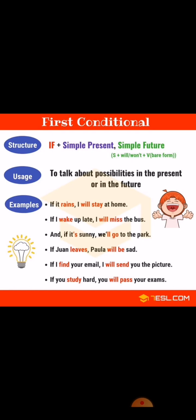For example: 'If it rains, I'll stay at home' — agar barish hogi to main ghar mein rahunga. Notice the if-clause comes first, followed by a comma, then 'I'll stay at home'. The condition is set, and the result is: I'll stay at home. Second example: 'If I wake up late, I'll miss the bus' — agar main der se uthunga to bus chhoot jayegi.